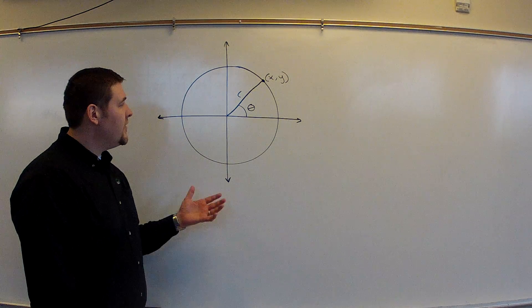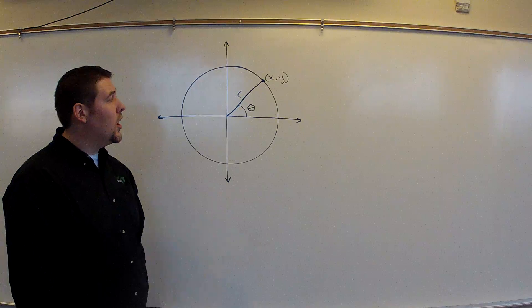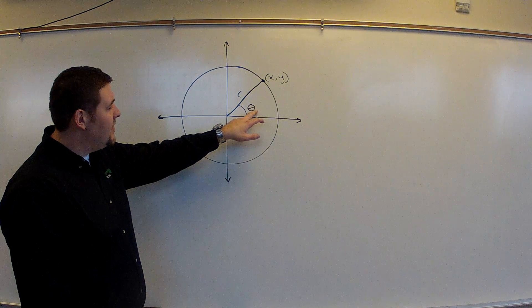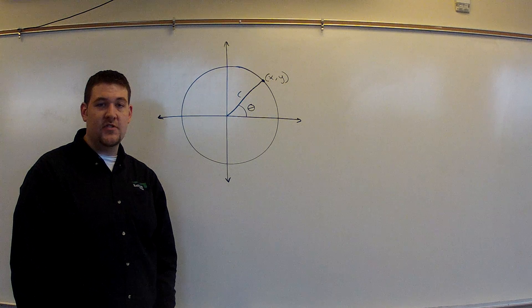So we're going to start with this drawing right here. We have this nice circle drawn with a radius indicated as r. And we're also given this Greek term here called theta. Theta represents an angle of rotation when you're going around a circle.